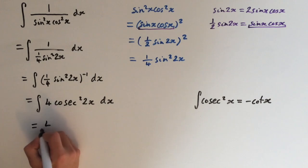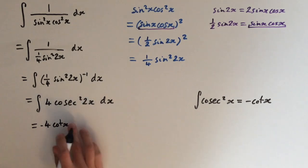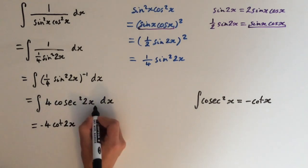So this will look like minus 4 cot of 2x. But we also have to take into account the 2x here. We have to use the reverse chain rule.